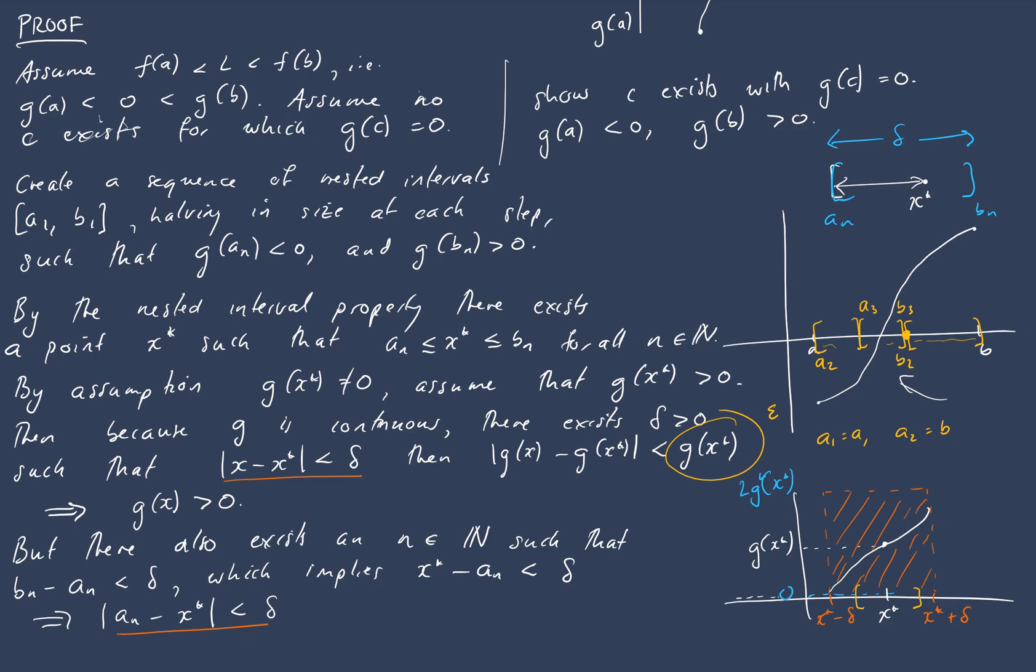Now the reason I wrote it in this form here is because it's to match up with this one. And following the implication here it then follows that g(a_n), well in particular this one here, g(a_n) must be positive. So g(a_n) is positive, contradicting our construction.